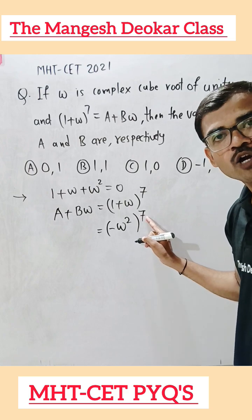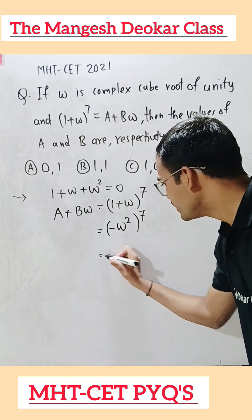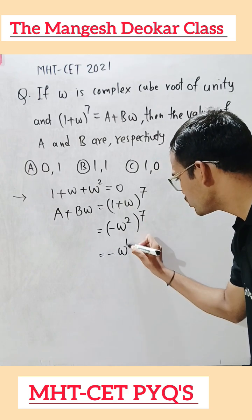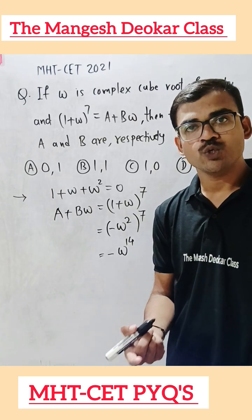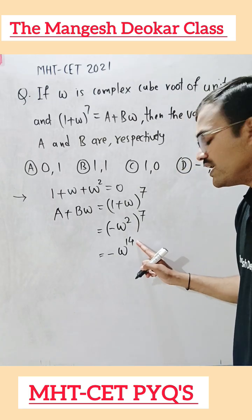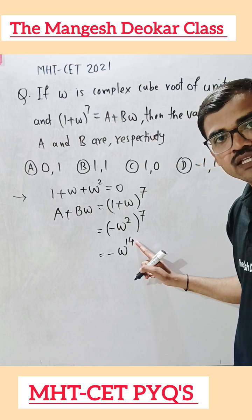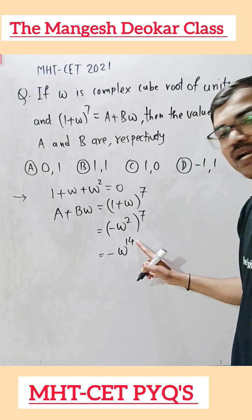As this is an odd power, the answer will be -ω^14. Now we know another relation: ω³ = 1. We will divide 14 by 3. 3 fours are 12.